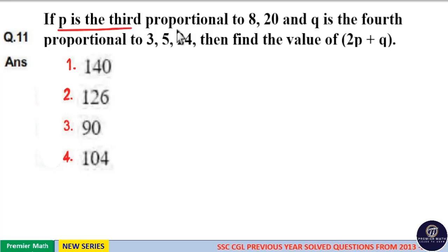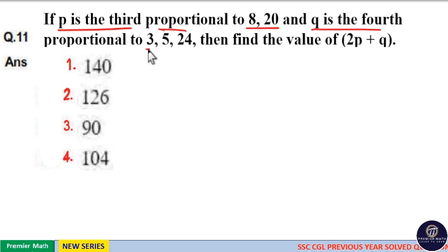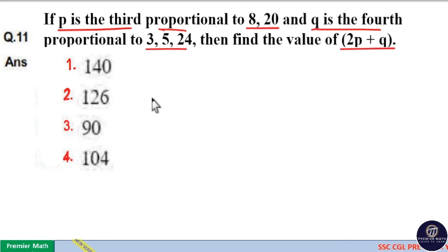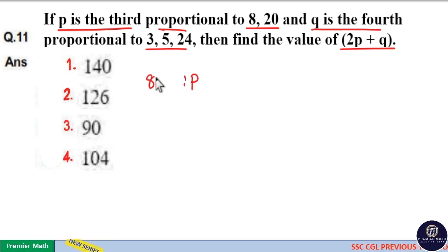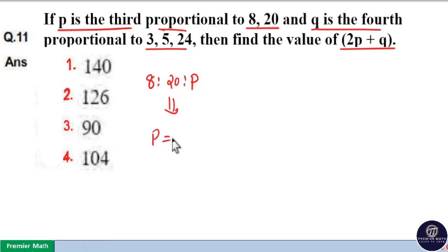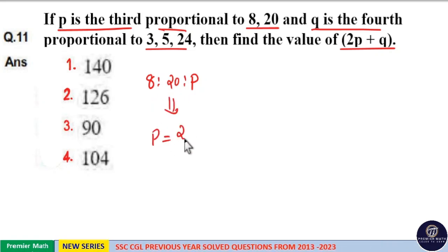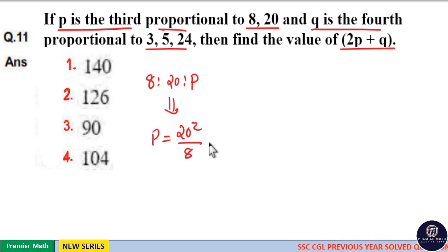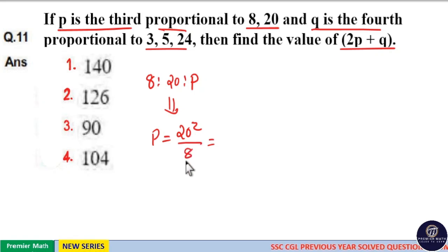If P is the third proportional to 8 and 20, and Q is the fourth proportional to 3, 5 and 24, then find the value of 2P plus Q. P is the third proportional to 8 and 20, so P equals the square of the second term divided by the first term: 20 squared divided by 8, which is 400 divided by 8, equal to 50.